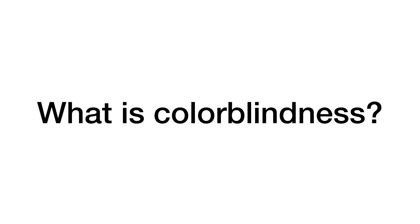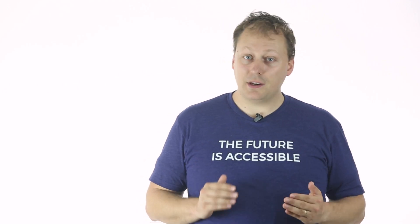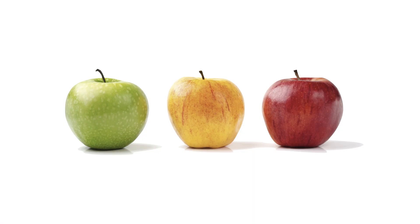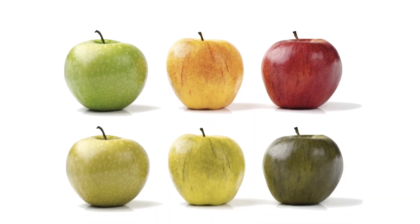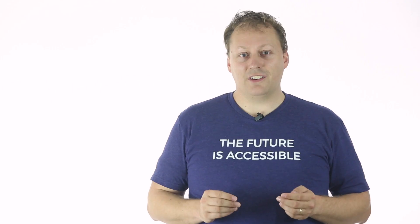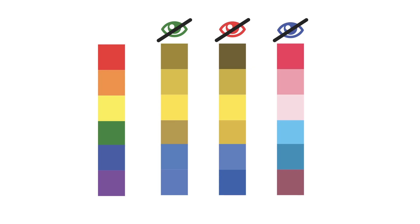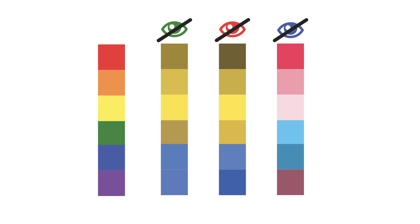So what exactly is colorblindness? Colorblindness occurs when someone has difficulty distinguishing between certain colors, the most common difficulty being between red and green. Because their sensitivity to a particular color is reduced or absent, the brain cannot accurately depict the color with the information it receives.